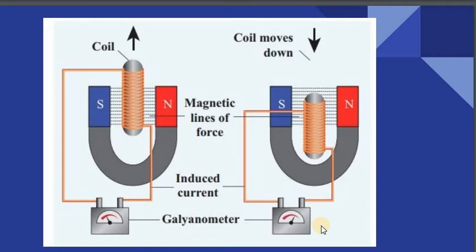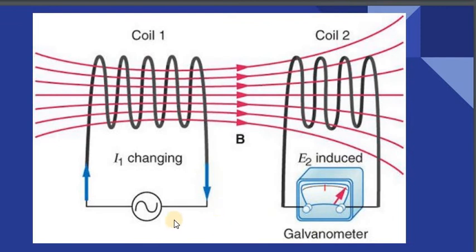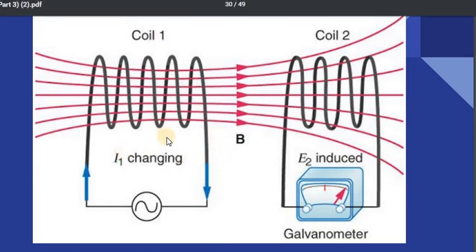When alternating current voltage is connected to the first coil — the first half being positive and the next half negative — there is a change in the magnetic flux. This change in magnetic flux induces a current or EMF in the second coil, which can be detected by the deflection in the galvanometer.